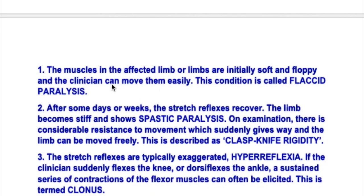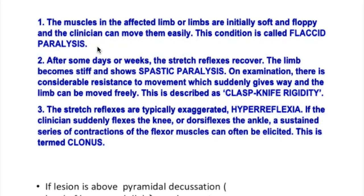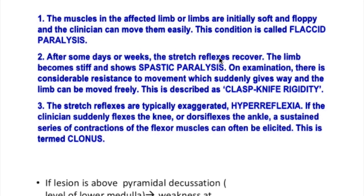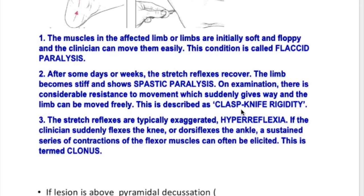Other features of upper motor neuron lesion: the affected muscles are initially soft and floppy, but after a few days or weeks the stretch reflexes recover and the limbs become stiff, resulting in spastic paralysis. Clasp knife rigidity is another feature — on examination there is considerable resistance to movement which suddenly gives way so the limb can be moved freely. Clonus: if the clinician suddenly flexes the ankle, a sustained series of contractions of the flexor muscles can often be elicited.